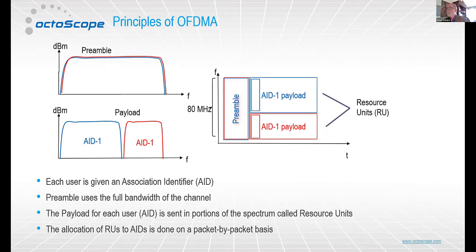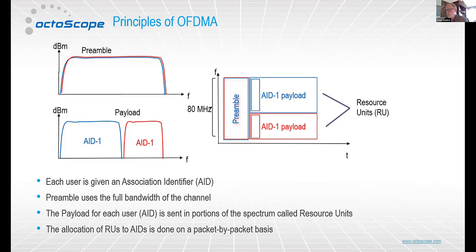The basic principles of OFDMA: each user is given an association identifier (AID). There is the usual preamble, which uses the full bandwidth of the channel as a standard part of Wi-Fi. The difference is that the payload for each user or each AID is sent in different portions of the spectrum. These portions of spectrum are called resource units (RUs). The allocation of AIDs to resource units is done on a packet-by-packet basis — it's very dynamic, and it makes studying the OFDMA performance quite interesting.